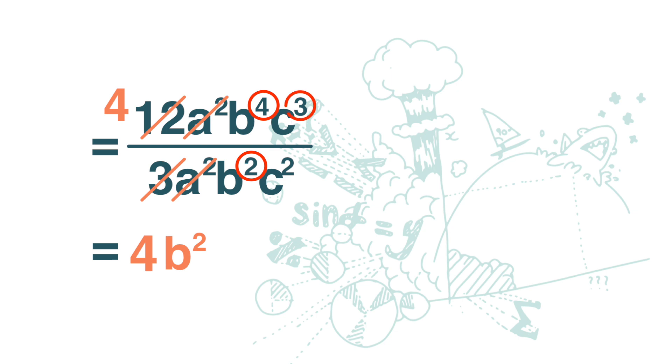And the c cube and c square. We subtract 2 from 3. And we get c. So the answer is 4b squared c. A quick reminder, c is actually c to the power of 1.